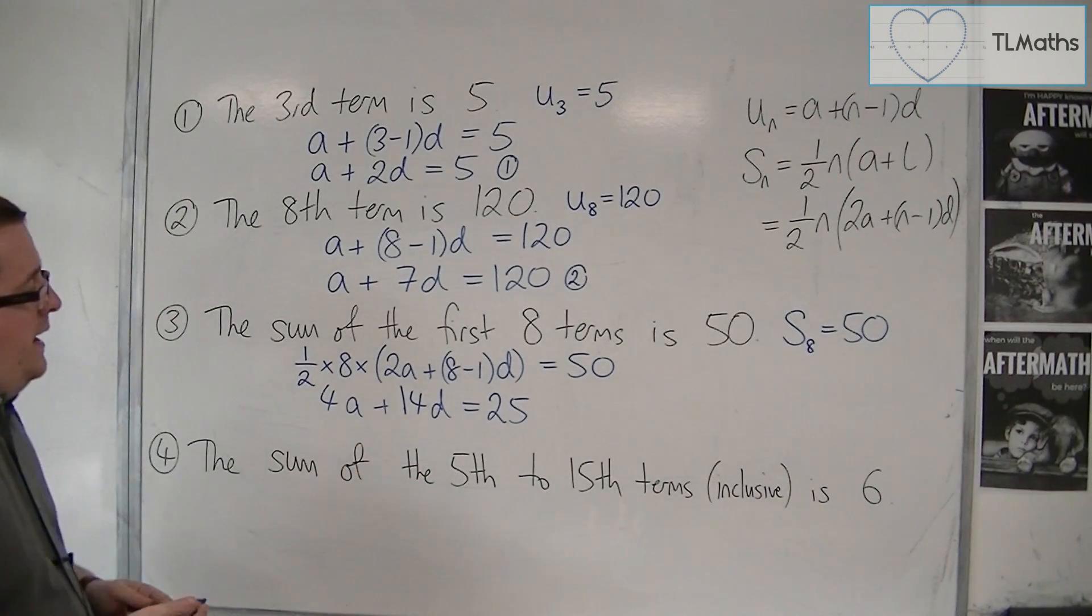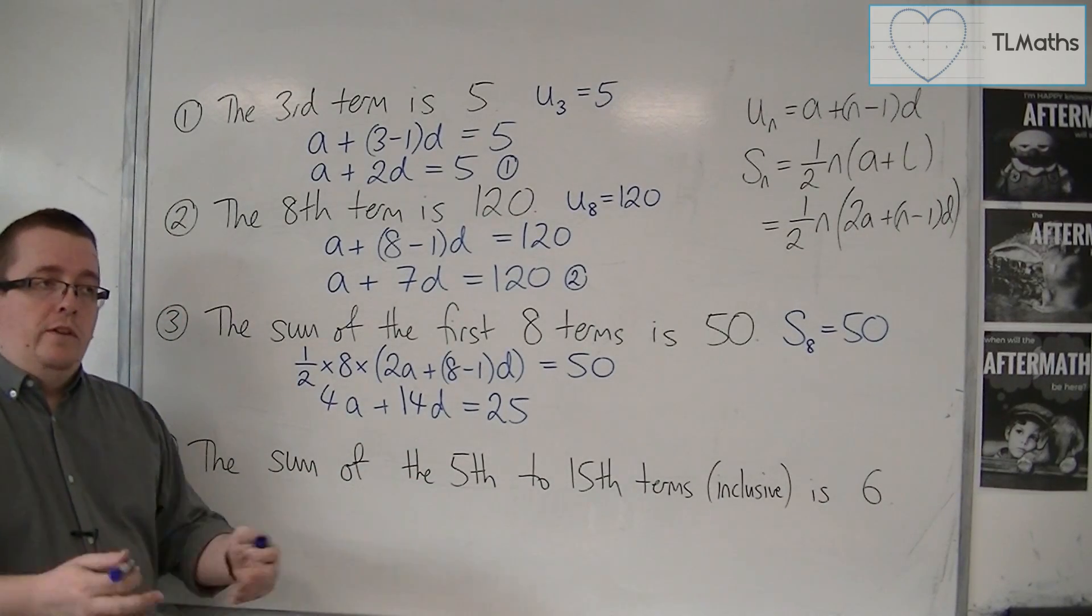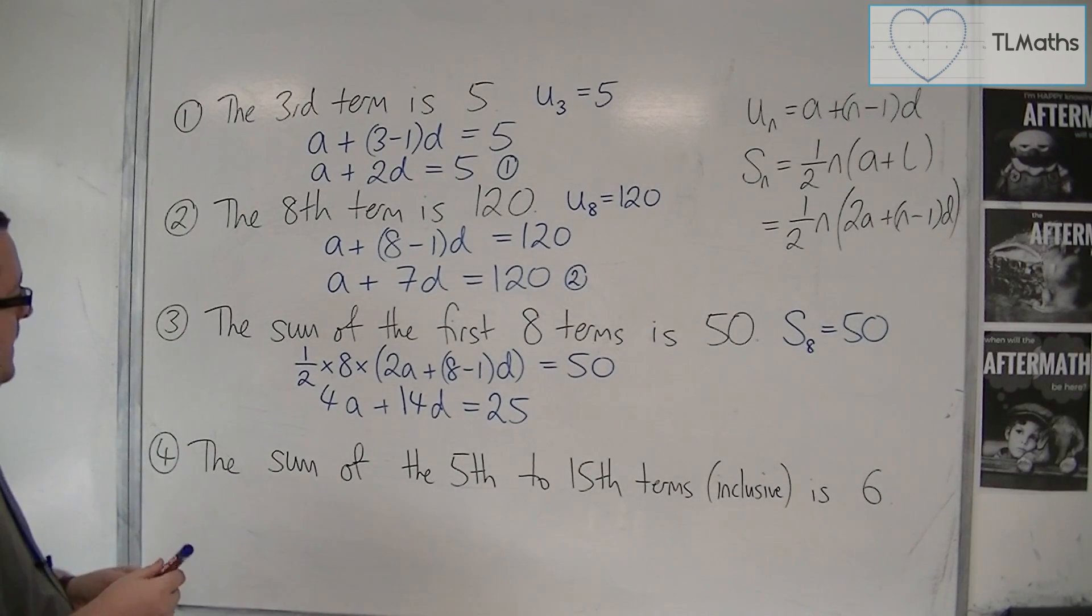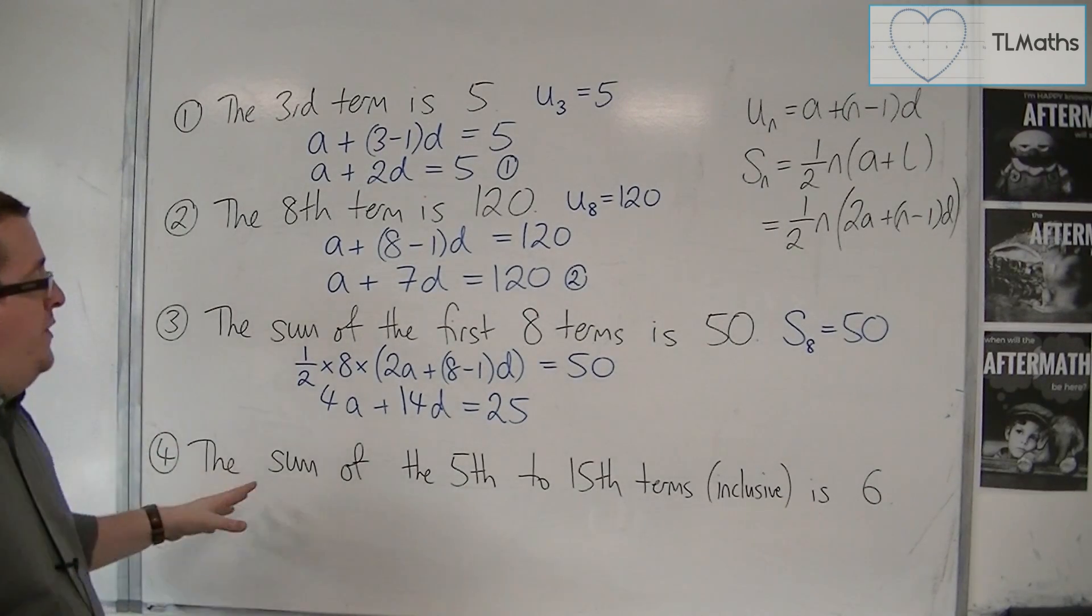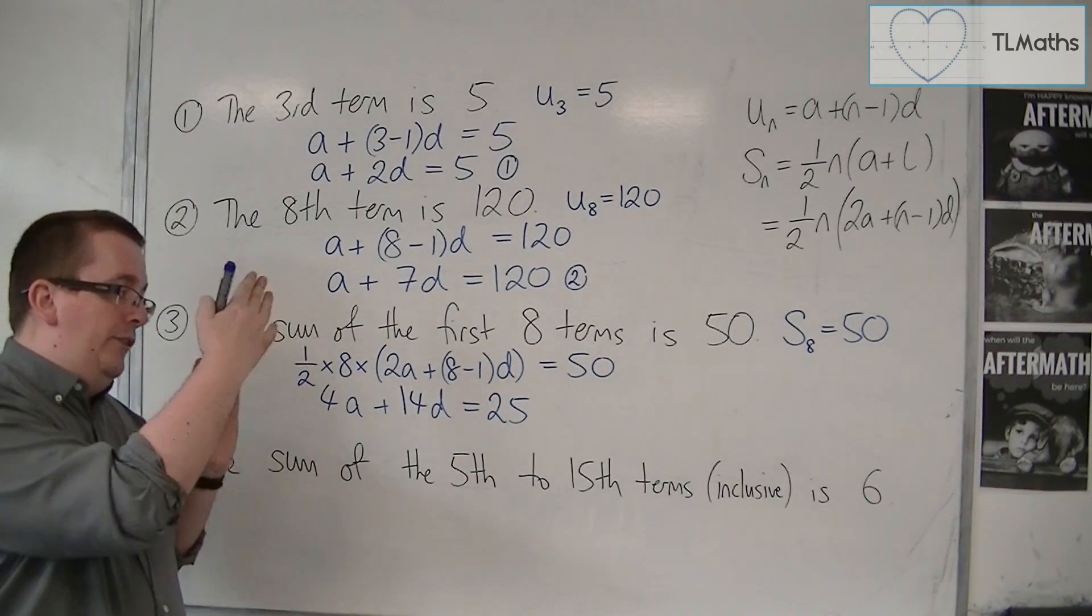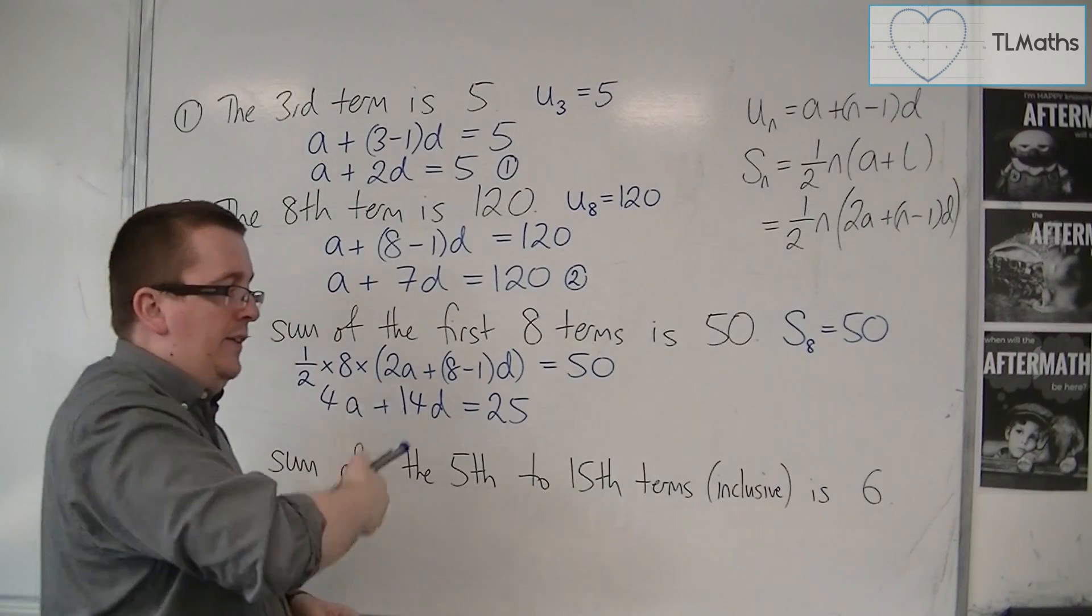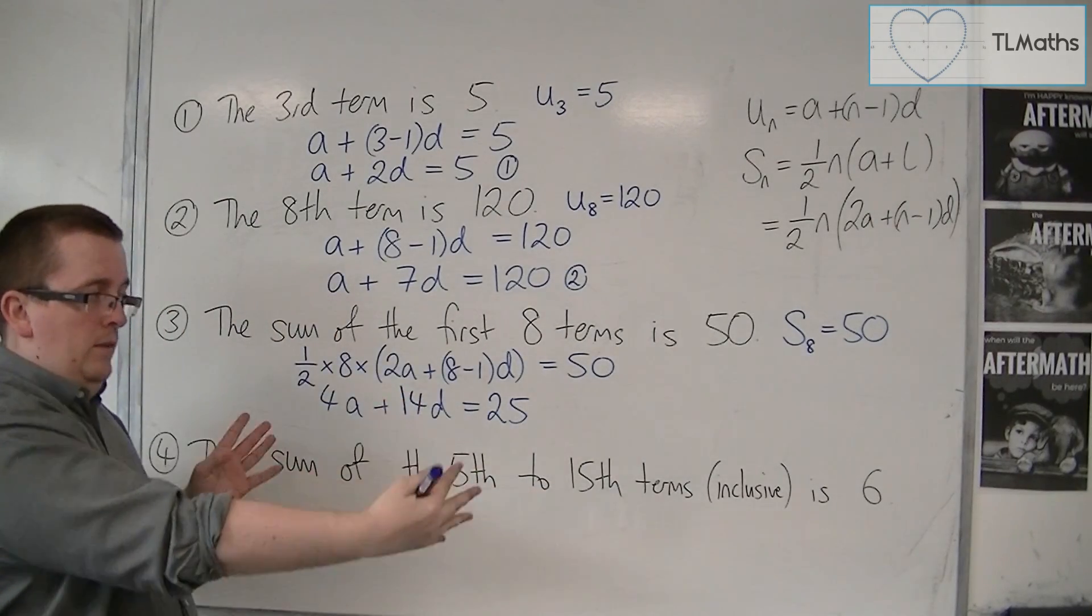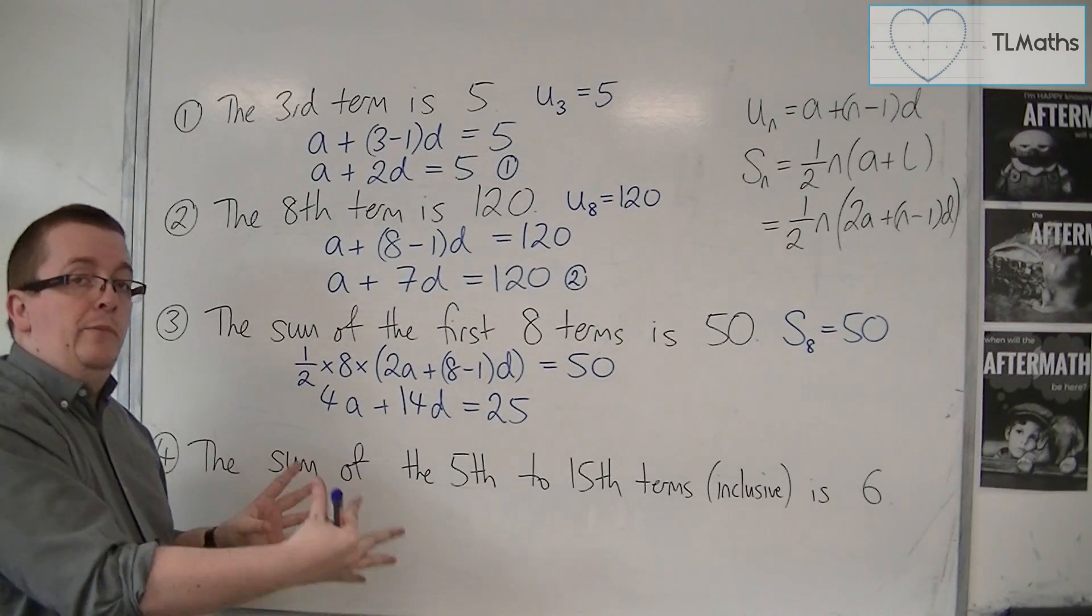This last one is really an extension to show how you could extend this to further problems. If I'm told that the sum of the 5th to the 15th terms, inclusive, so that's number 5, 6, 7, 8, 9, 10, 11, 12, 13, and 14, all those terms add up to 6.